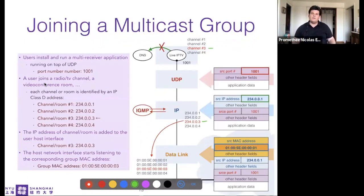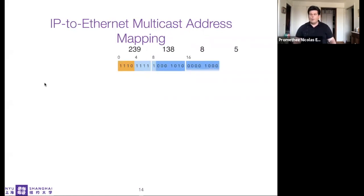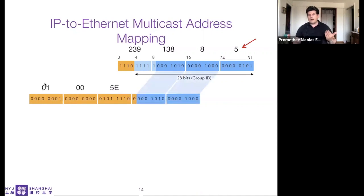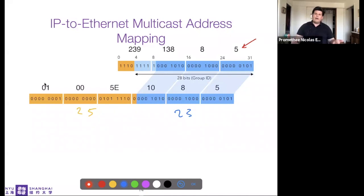For the MAC address mapping: when your application subscribes to a channel, it adds a Class D IP address, which automatically generates a corresponding multicast MAC address. The MAC prefix is 25 bits long, and the remaining 23 bits are copied from the multicast IP address. This is fully automated - checking one box in the application causes both the IP and MAC address changes.